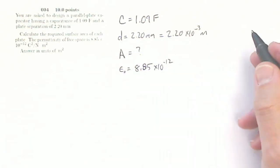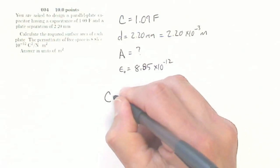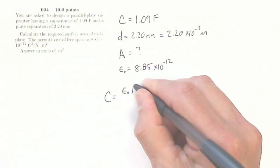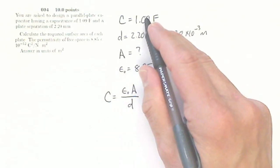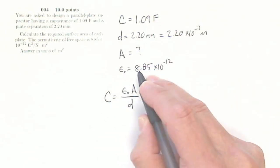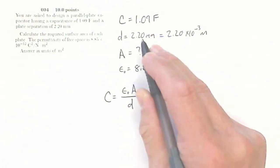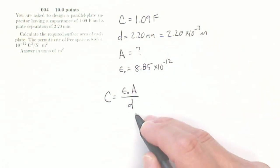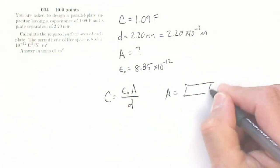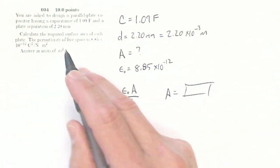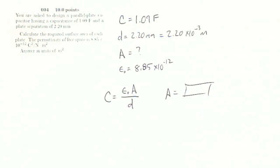And now, my equation for the capacitance of a capacitor is epsilon naught A over d. And I know my capacitance in farads, that's good. I know my epsilon naught. I know my d of 2.20 times 10 to the minus 3. And I'm looking for A. So here, I can solve for A and get the answer in units of meters squared.